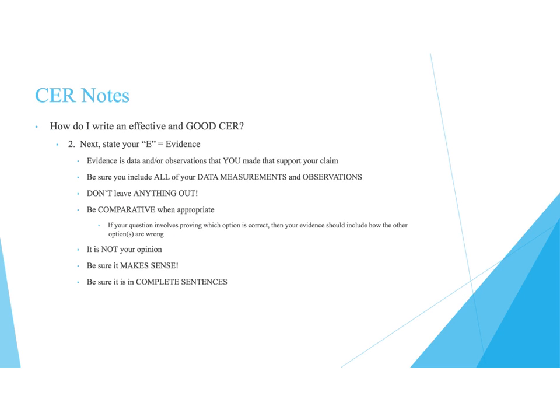The claim is the easiest part — one complete sentence that answers the question and makes sense. The E stands for Evidence. Evidence is the data or observations that you made during the experiment to support your claim. It may also come from a reading, video, or other source — data and observations that support the claim.